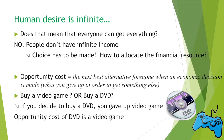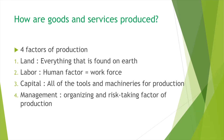Opportunity cost exists everywhere where you have to make choices between two options. Now, how about the goods and services produced within the production process? There are mainly four factors of production, which are land, labor, capital, and management. Land is basically everything that is found on earth, such as natural resources.